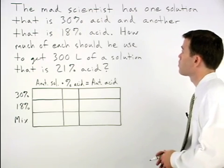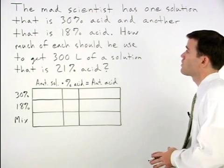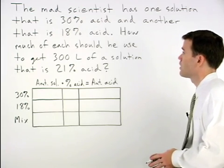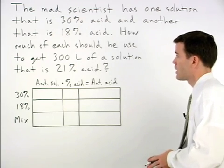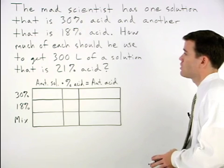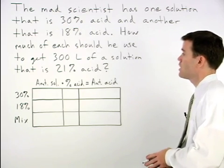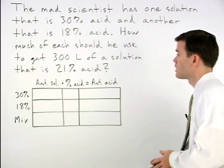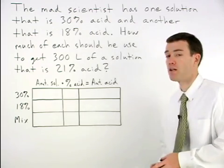The mad scientist has one solution that is 30% acid and another that's 18% acid. How much of each should he use to get 300 liters of a solution that's 21% acid?